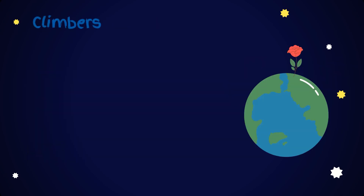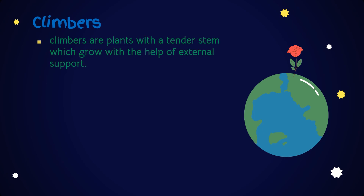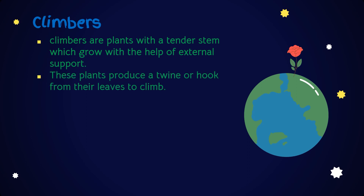Climbers are plants with a tender stem which grows with the help of external support. These plants produce a twine or a hook from their leaves to climb. Examples: bottle gourd, bitter gourd and grapevine plants.